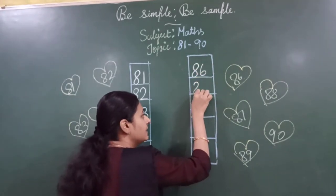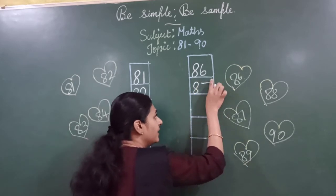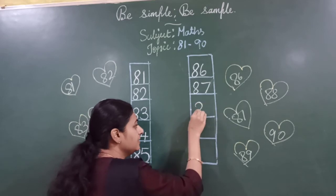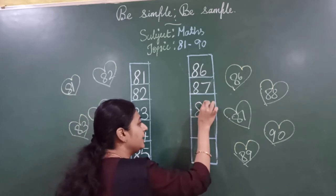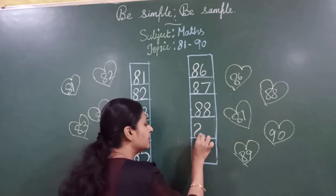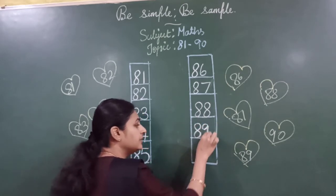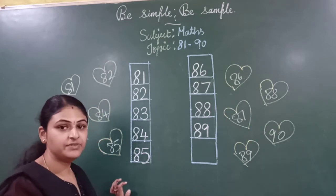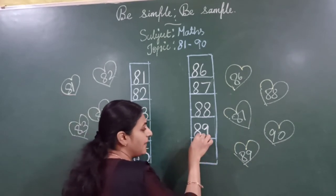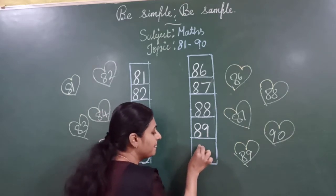Okay children? 87. 88. 89. After 89, the next number will become 90.